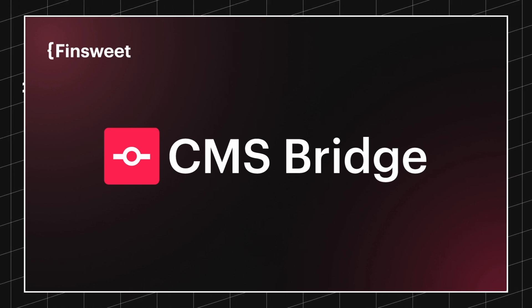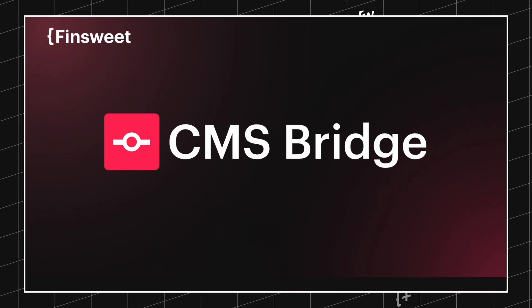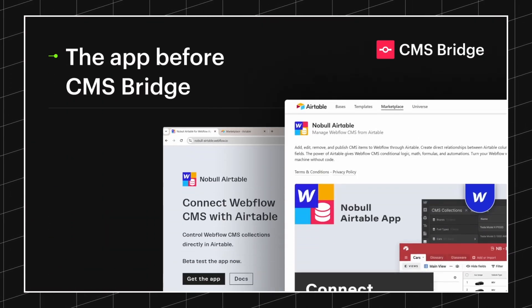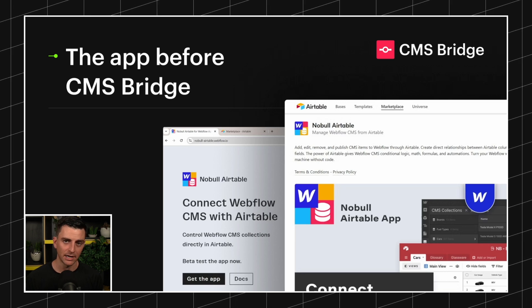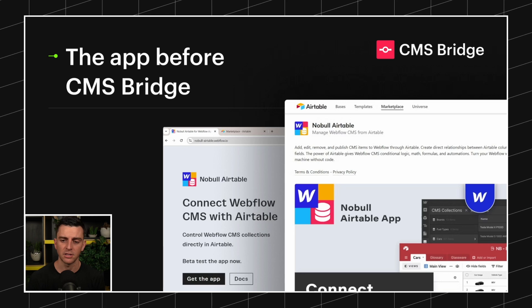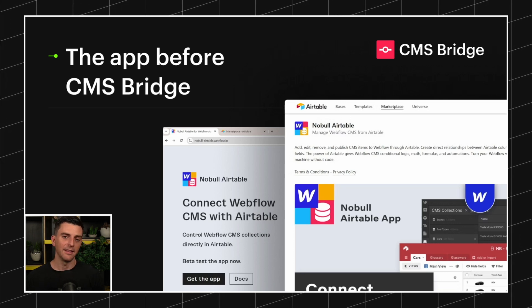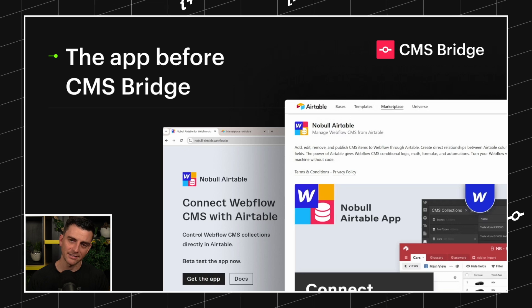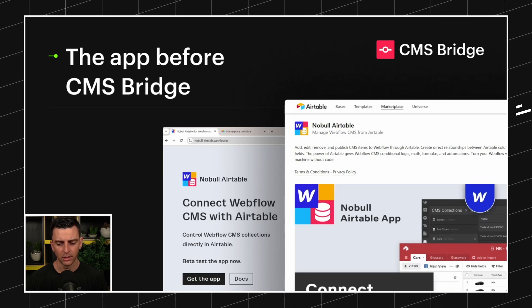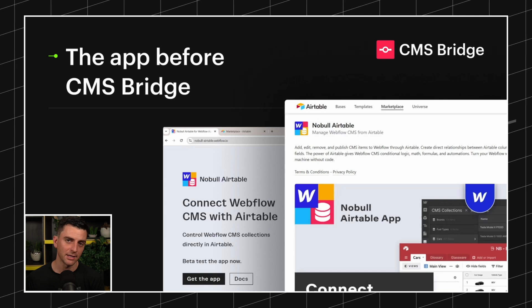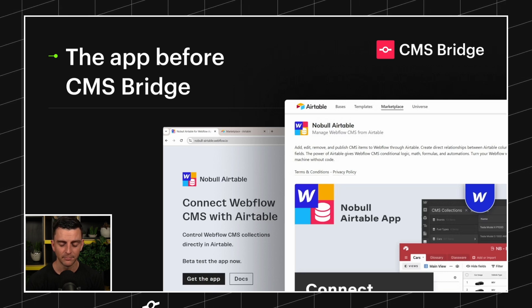This is the rebuild that integrates so many great new features, which we'll talk about later in the stream. First, let's talk about the origin story. The app before CMS Bridge was called Noble Airtable. It was released years ago as a beta. It had known issues, but we wanted to release it, get feedback, and make updates — but we never made those updates. It stayed in beta forever, and the developer who built it was no longer with the company.